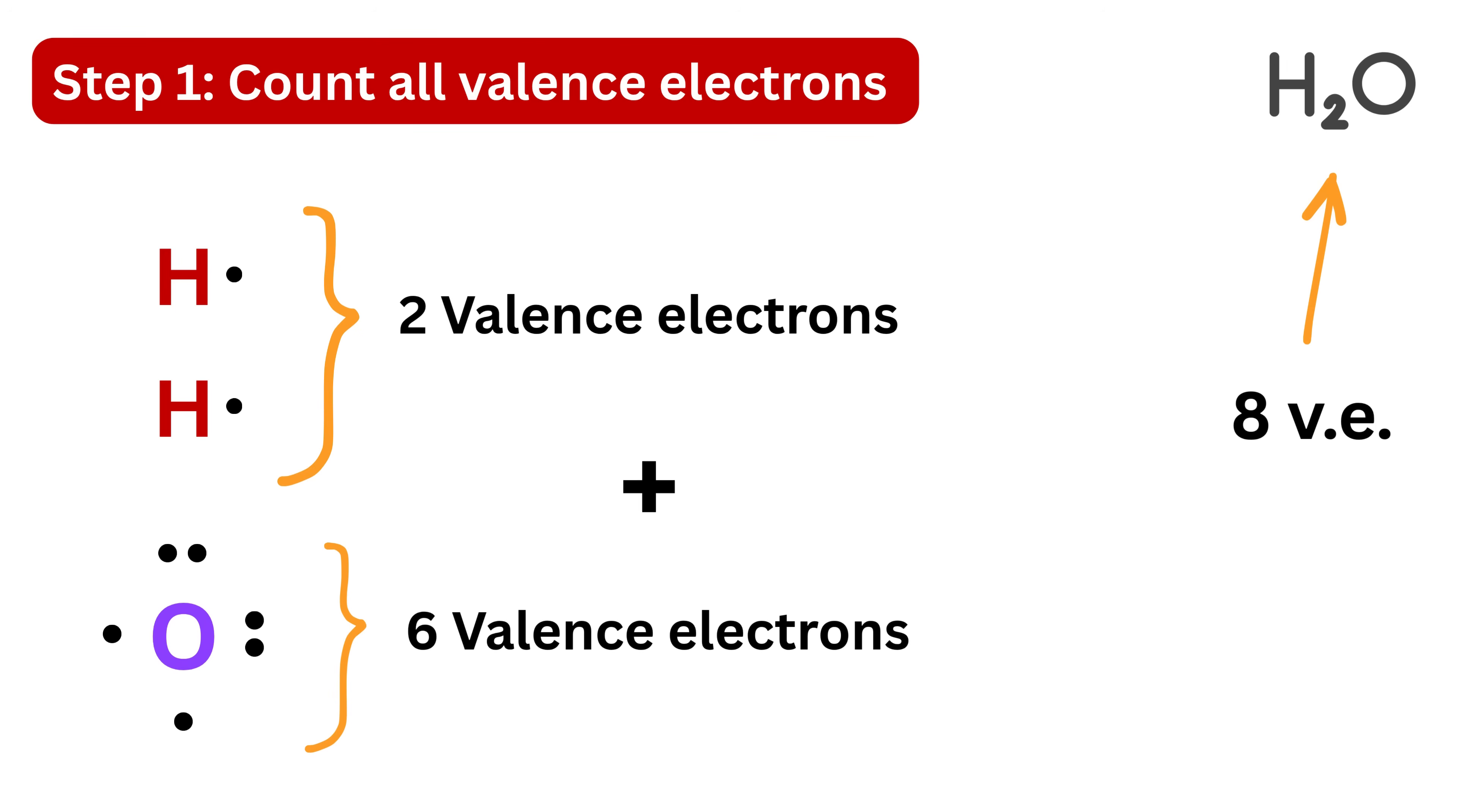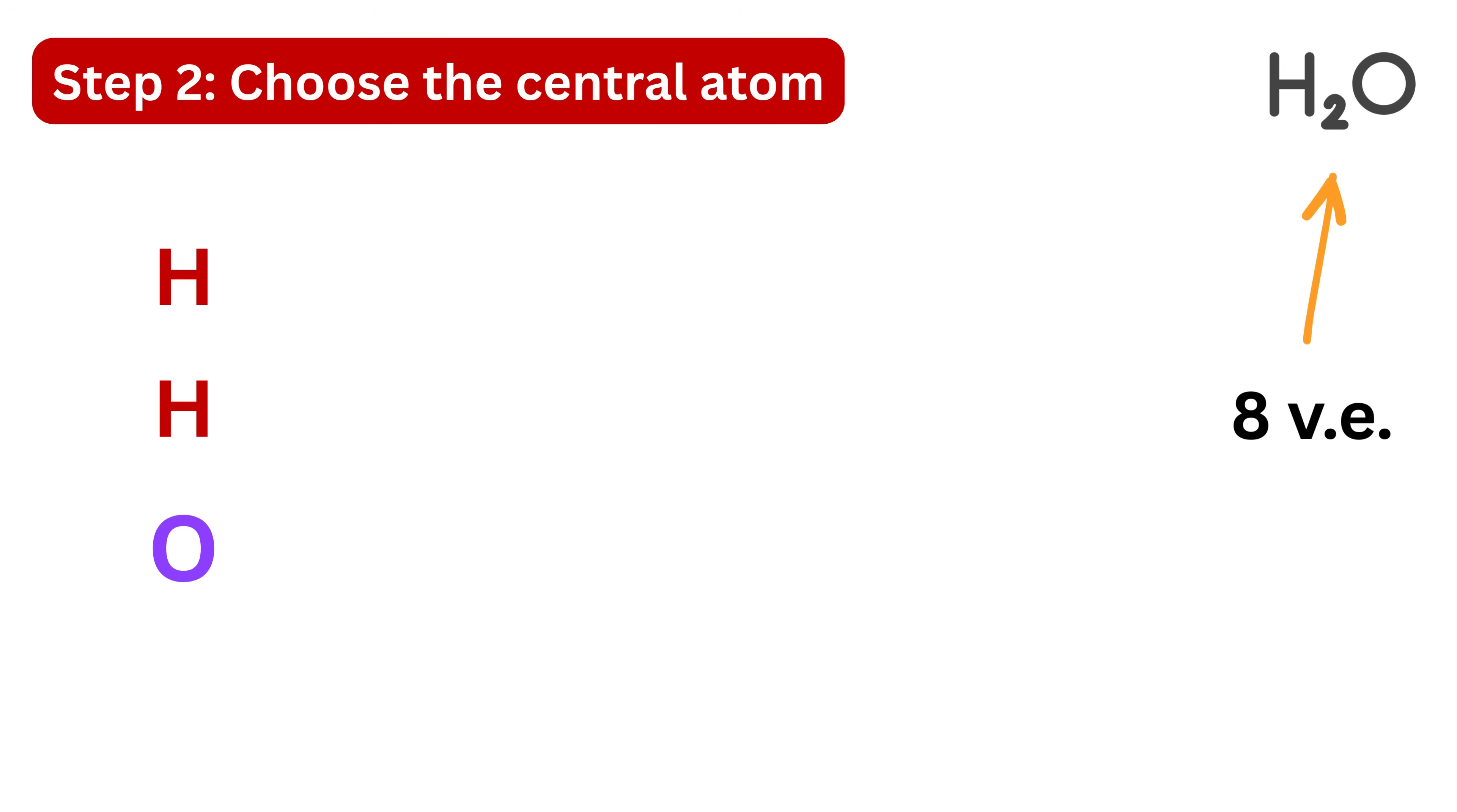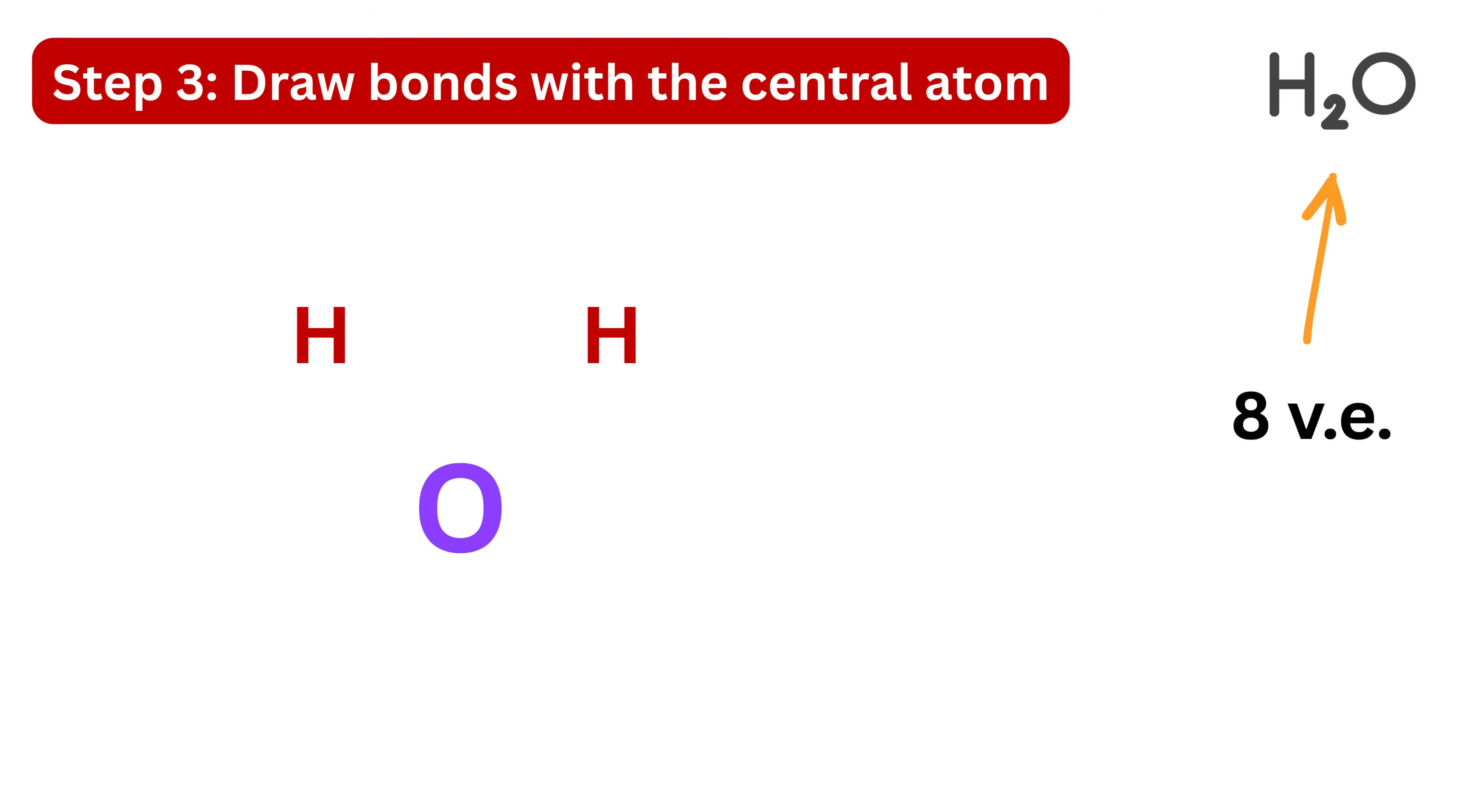Step two is to choose the central atom. In most molecules, one atom sits in the center and the others connect to it. The central atom is usually the one that appears only once in the formula, or usually all the other atoms will be bonded to. Here we have one oxygen and two hydrogens, so oxygen goes in the middle and the two hydrogens will connect to it. In step three, we will draw bonds with the central atom. As we have seen, a single bond is simply one pair of shared electrons—one electron comes from one atom and the other comes from the atom it is bonding with. So here, to form a stable bond, each hydrogen shares its single electron with oxygen, and oxygen shares one electron with each hydrogen in return. This sharing creates two single bonds: one between oxygen and the first hydrogen, and one between oxygen and the second hydrogen.